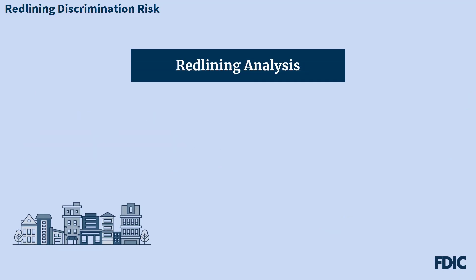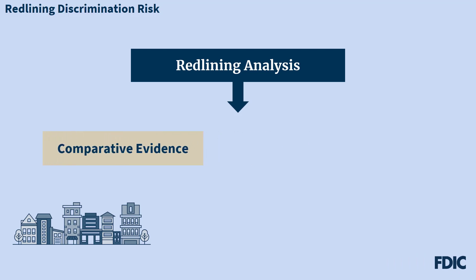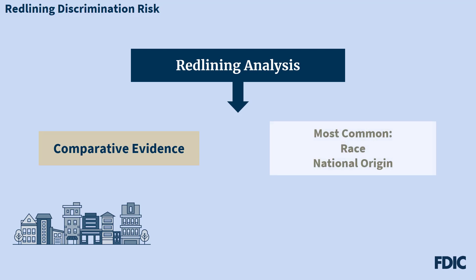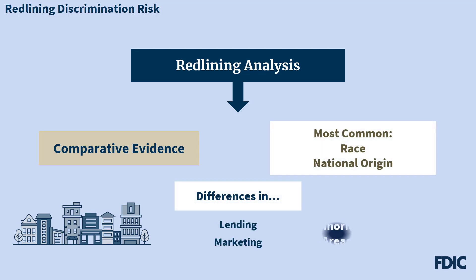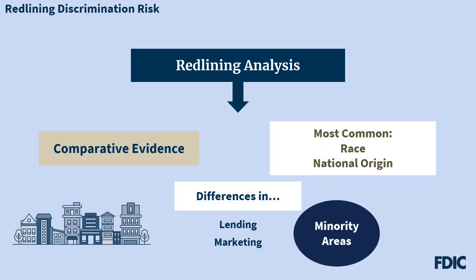A redlining analysis usually will focus on comparative evidence, as overt evidence of redlining is relatively uncommon. Examiners compare the bank's treatment of areas with contrasting racial, national origin, age, or other prohibited characteristics. The most common redlining analysis is based on race or national origin, where differences in lending and marketing are observed in minority areas, which are areas with a high concentration of residents of a particular race or national origin. The same analysis could be adapted to evaluate relative access to credit for areas of geographical concentration with respect to other prohibited basis groups.